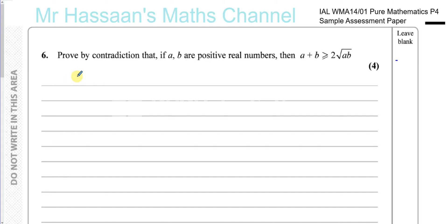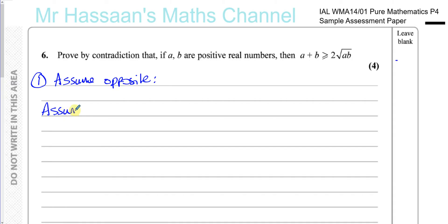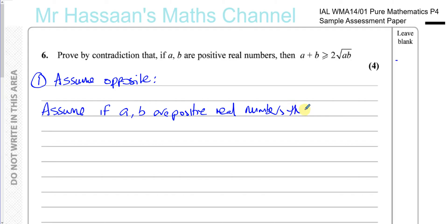When you do proof by contradiction, you first assume the opposite of the statement. So we assume that if A and B are positive real numbers, then the opposite of this statement would be: A plus B is less than two times the square root of AB.